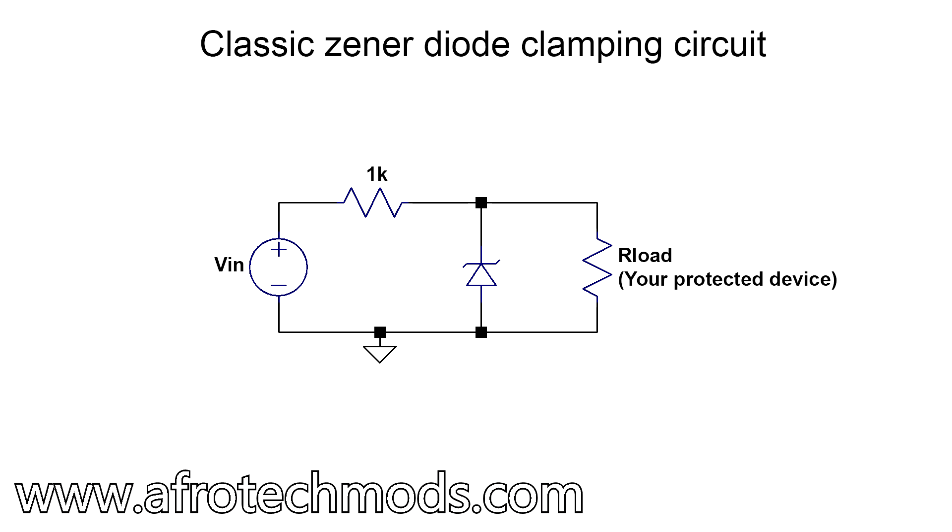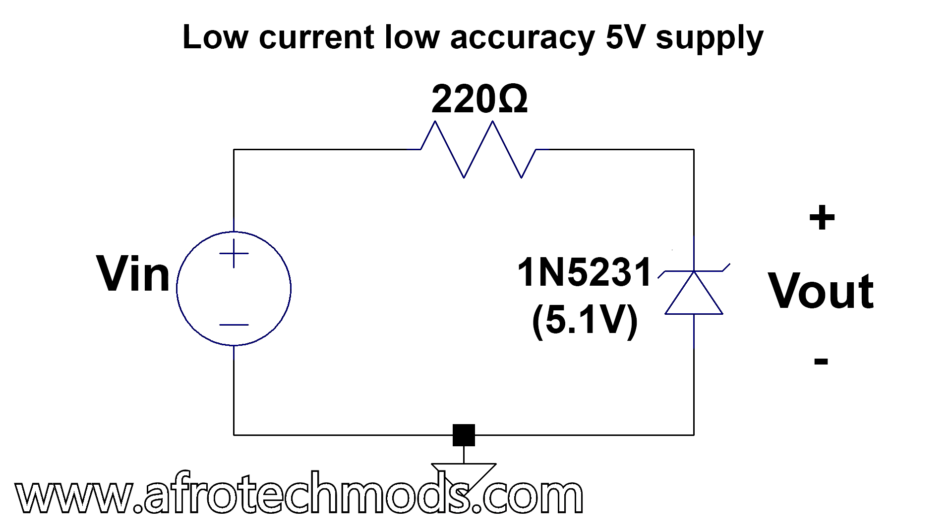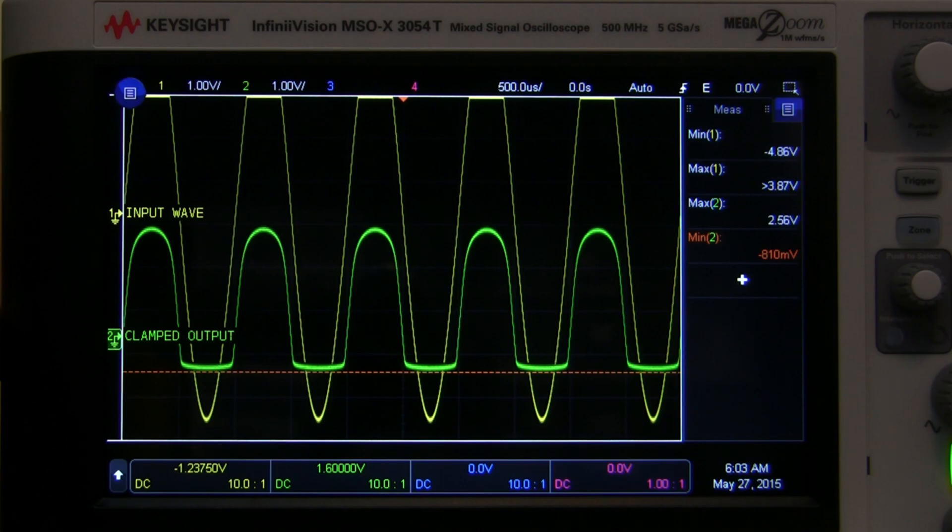In this video I'm going to talk about Zener Diodes and how you can use them to protect your circuits from sudden voltage spikes and how you can use them as a cheap voltage regulator. You can even use them as part of an audio distortion circuit. Let's get started.